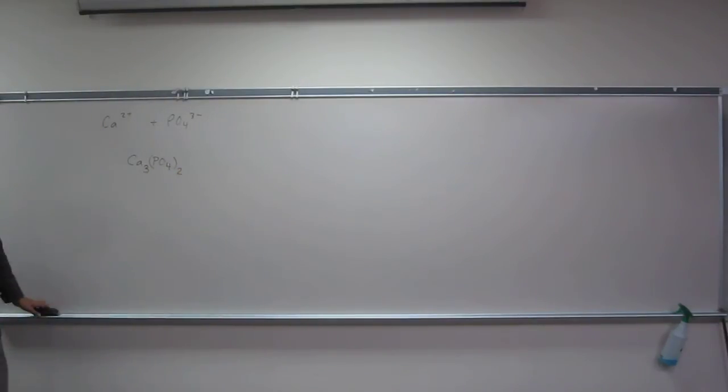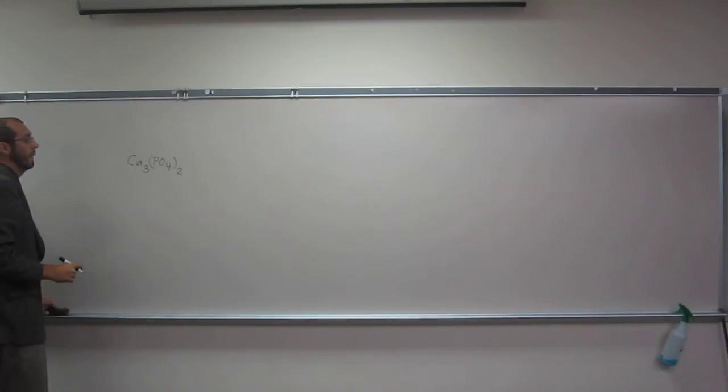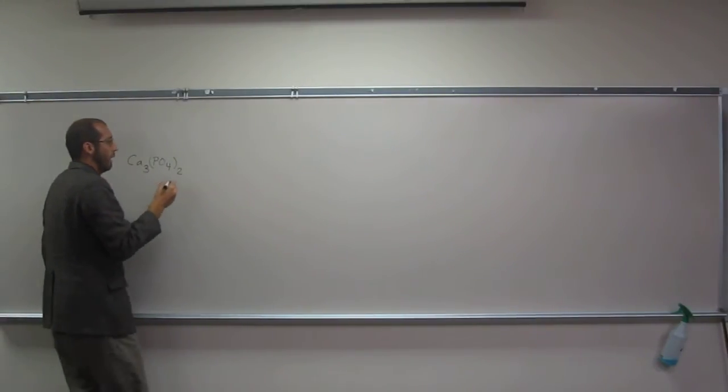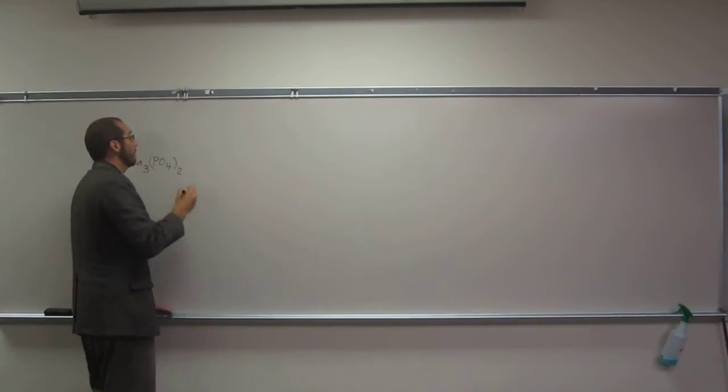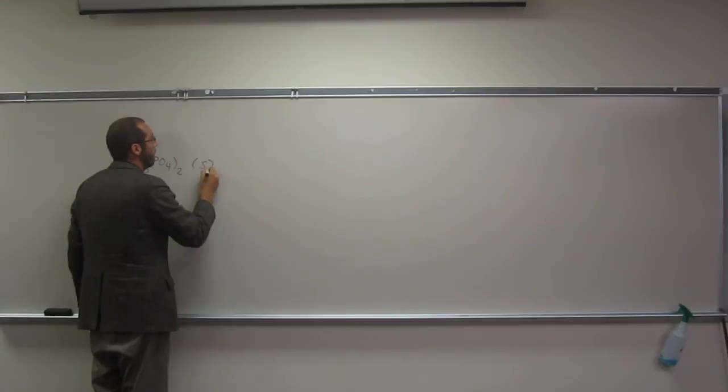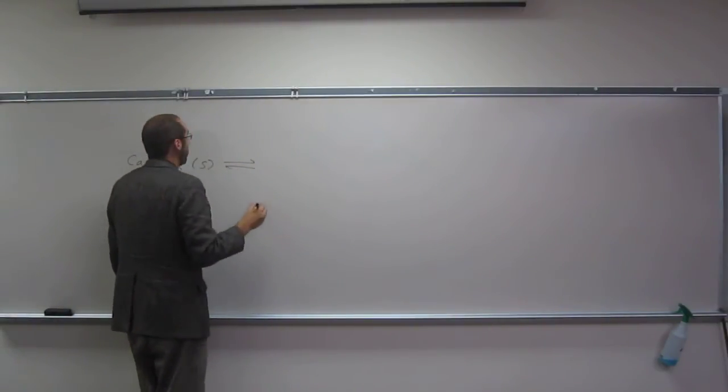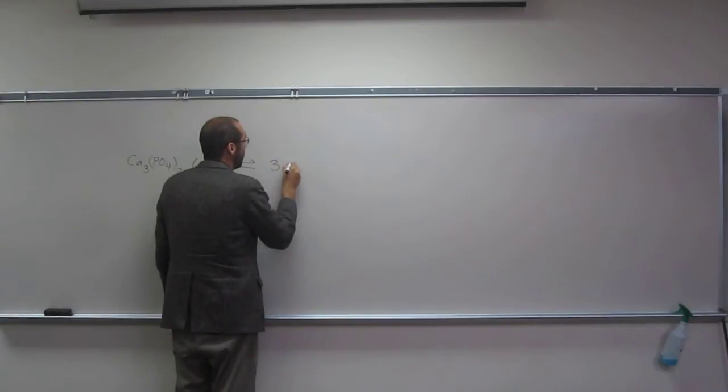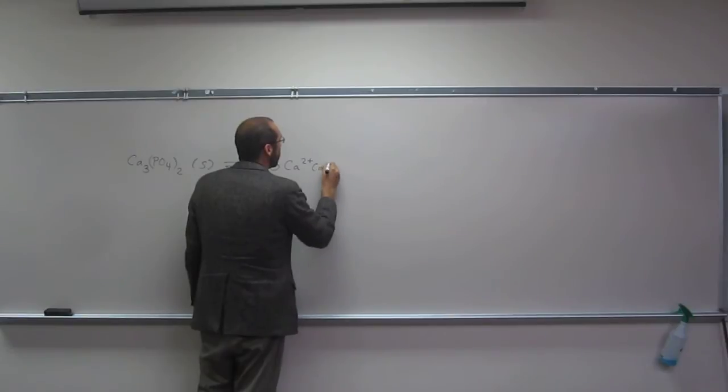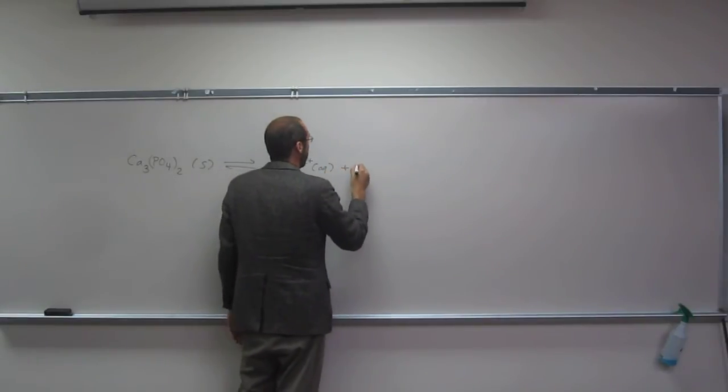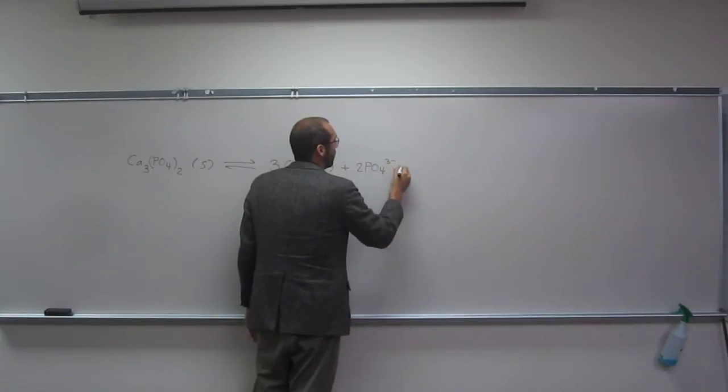So that's the formula unit of calcium phosphate. And in order to write this ion product, so that's like Ksp, we're going to have to remember the reaction equation. So reaction equation for this would be 3 Ca2+ aqueous plus 2 PO4 3- aqueous.